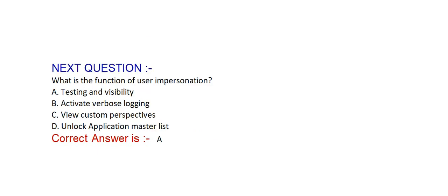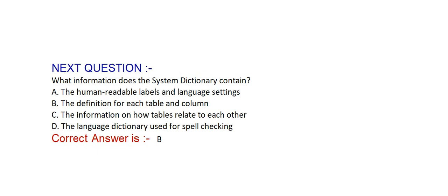What is the function of user impersonation? Option A: testing and visibility. Option B: activate verbose login. Option C: view custom perspectives. Option D: unlock application master list. Correct answer is option A — testing and visibility.